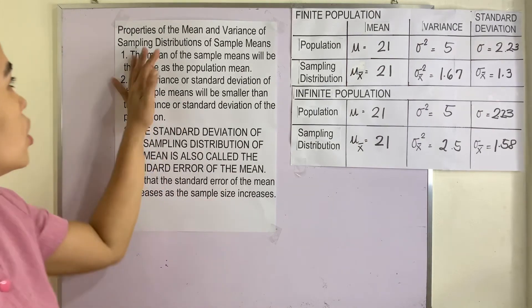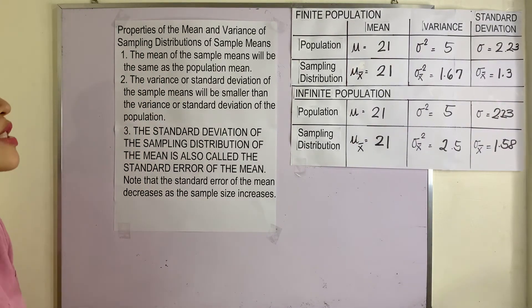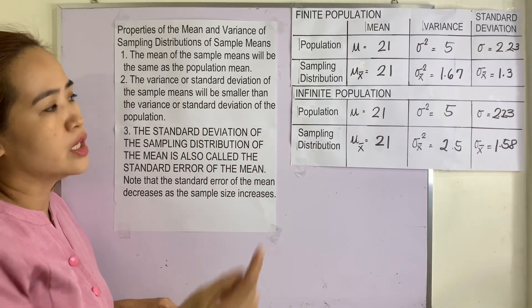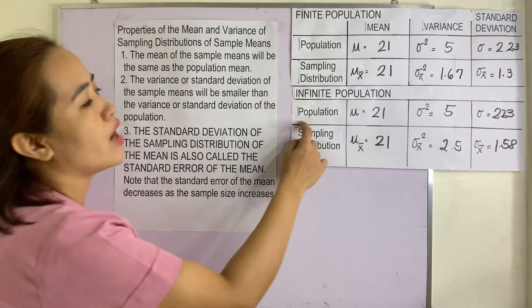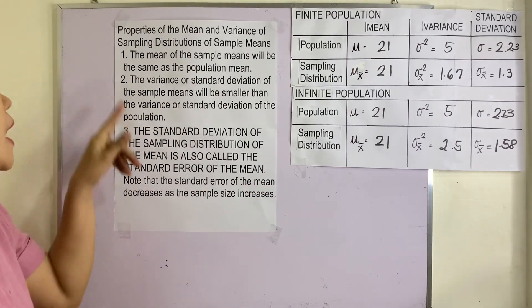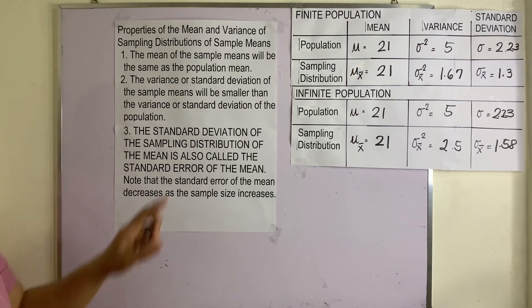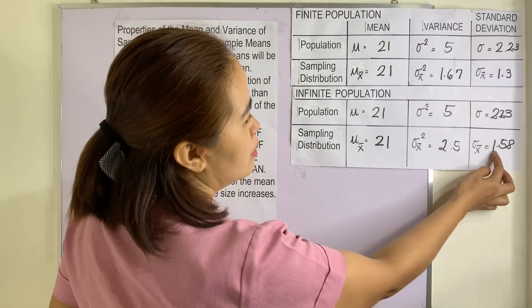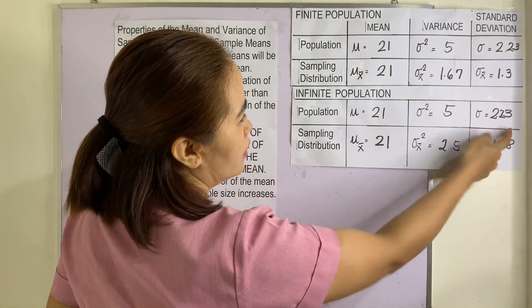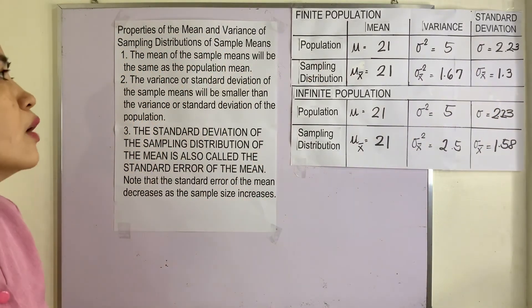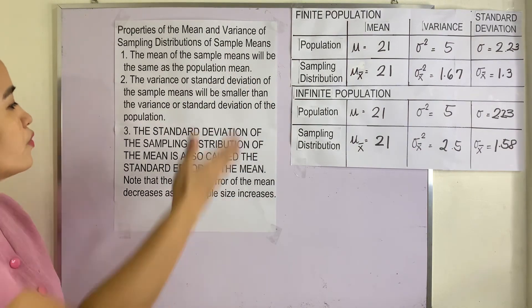From this data, we can identify the properties of the sampling distribution of sample means. First, the mean of the sample means will be the same as the population mean — so you don't need to calculate it separately. Second, the variance or standard deviation of sample means will be smaller than the variance or standard deviation of the population. For example, 1.58 is smaller than 2.23 for infinite, and 1.3 is smaller than 2.23 for finite population.